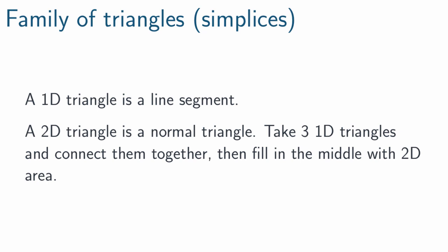So a 1D simplex, a 1D triangle, is just a line segment - a 1D edge with two vertices on the ends. And a 2D triangle is just a plain old triangle. That's how we all use the word in common English. I want to present this shape to you in a slightly different way, though. I want you to think of it as three 1D triangles.